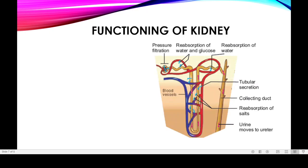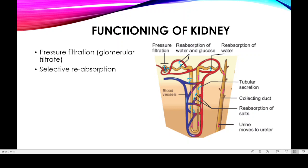What is the major function of the kidney? The major function of the kidney is divided into three steps: pressure filtration, selective reabsorption, and tubular secretion. These are the three major processes — first pressure filtration, then selective reabsorption, and then tubular secretion.